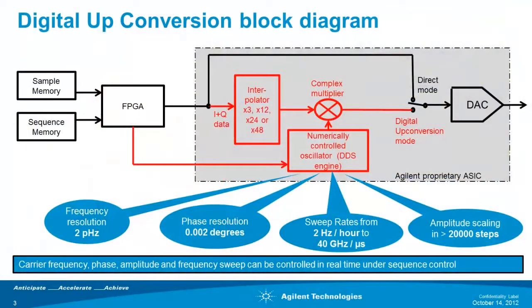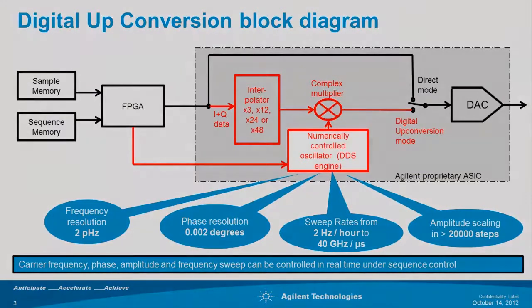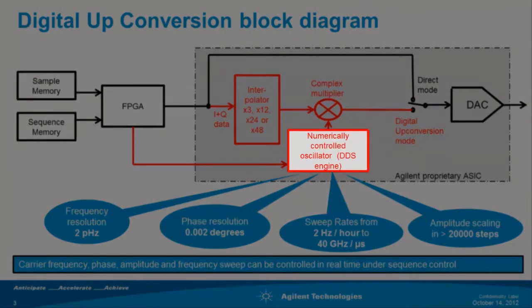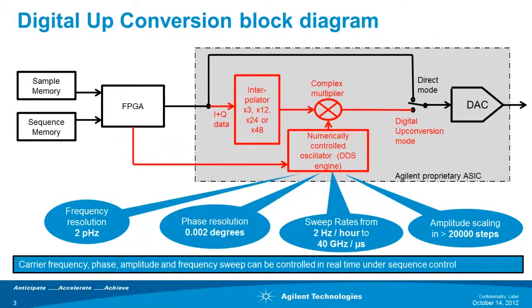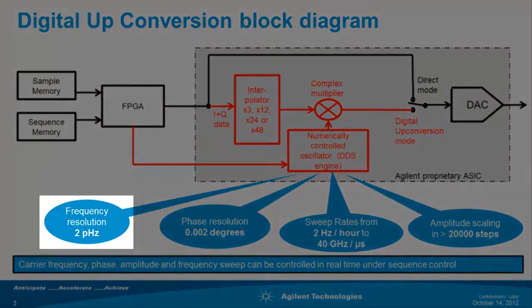Consequently, the local oscillator for this upconversion is also implemented in the digital domain. We call it a numerically controlled oscillator, or NCO. Due to the phase-accumulator resolution of 72 bits, the NCO has a frequency resolution of a few picohertz.